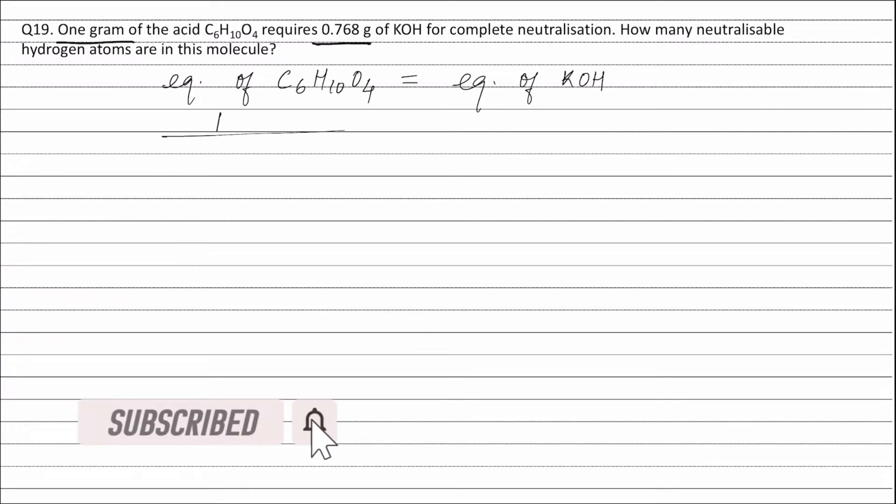Now, equivalent weight of C6H10O4 will be molecular weight of C6H10O4, that is 146, divided by basicity. Basicity of C6H10O4 will be equal to the number of neutralizable hydrogen atoms present in C6H10O4.